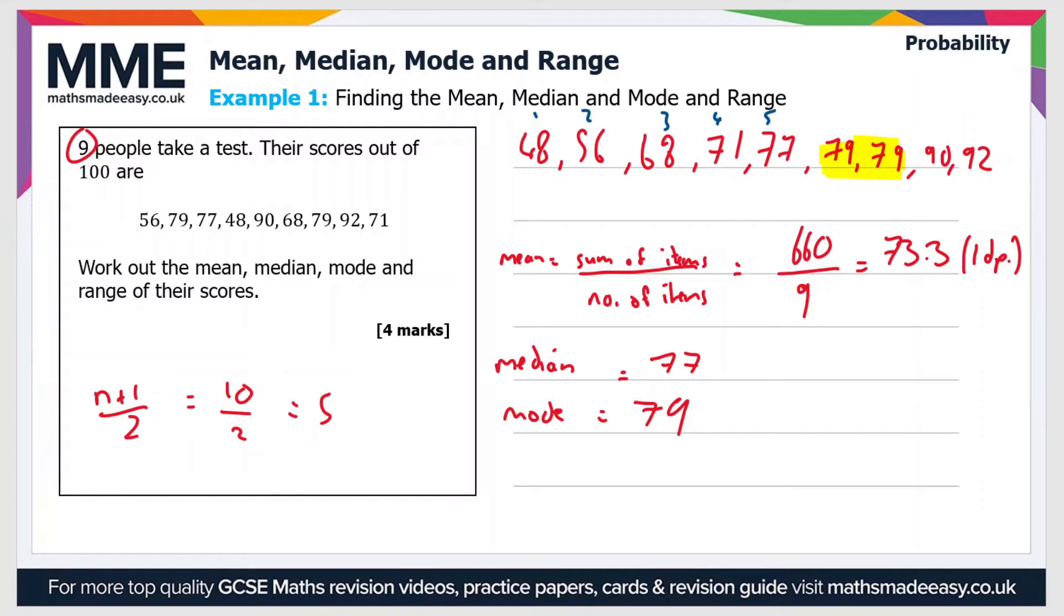So finally then the range. Now the range is just the largest value minus the smallest value. So in this case the range is 92 minus 48 and if you do that you should get a value of 44.